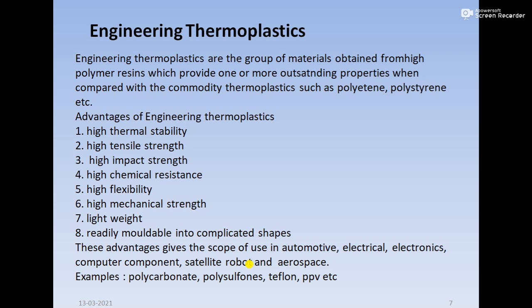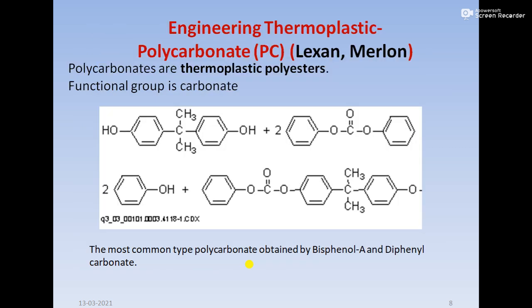We will discuss polycarbonate. This is the example of polycarbonate. It is also called Lexan and Merlon. Polycarbonates are engineering thermoplastics which are polyesters. You can see this is the C-O-R-C linkage — that is the ester linkage, and that is why it is called polyester.